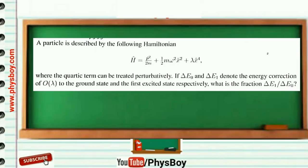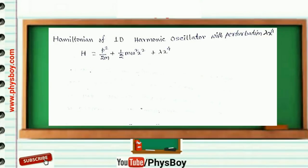The question was: a particle is described by the following Hamiltonian where the quadratic term can be treated perturbatively. If delta E naught and delta E1 denote the energy correction of the order of lambda to the ground state and first excited state respectively, what is the fraction delta E1 by delta E naught? I will solve this problem in two different methods — first using straightforward perturbation theory, then using a short trick. This is the given Hamiltonian of a one-dimensional harmonic oscillator with perturbation lambda x to the power 4.